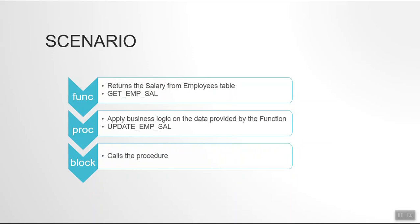Let's take a scenario to understand this. We have a function which takes in an employee ID and returns its salary, a procedure which calls this function, and then an anonymous block which calls the procedure. When we execute the procedure and get an exception, we need to find out: did it originate in the block itself, in the procedure, or in the underlying function? How can we get the whole error stack to understand the root problem and where to find it?